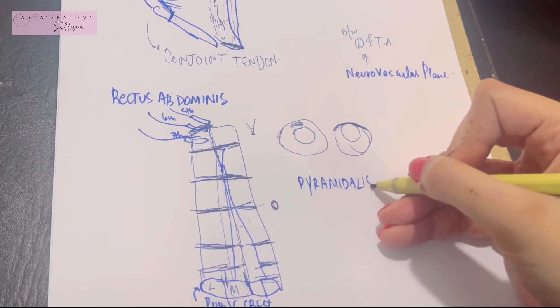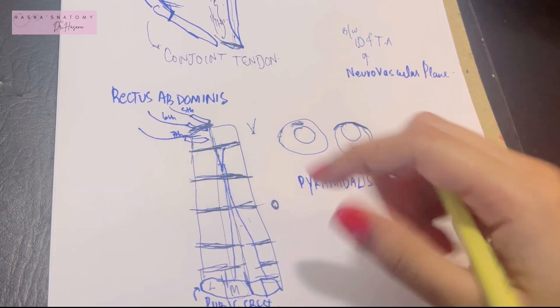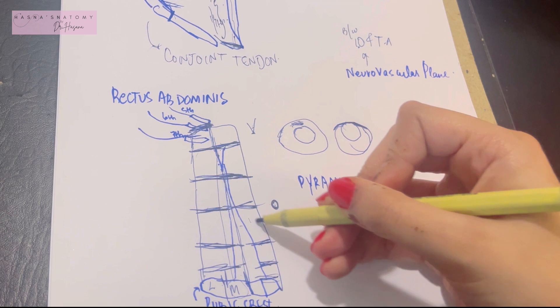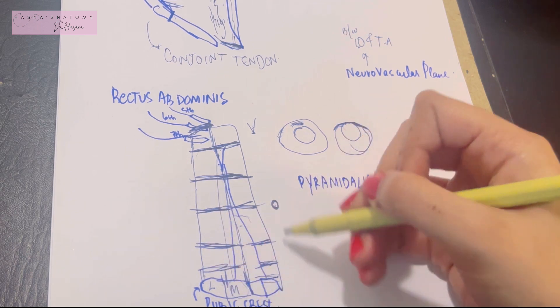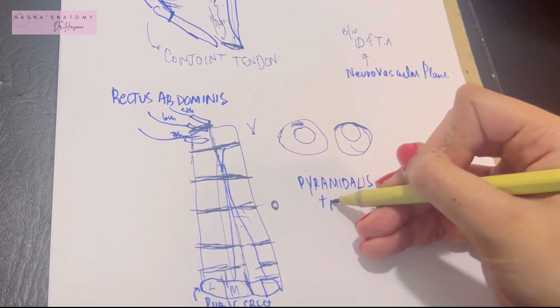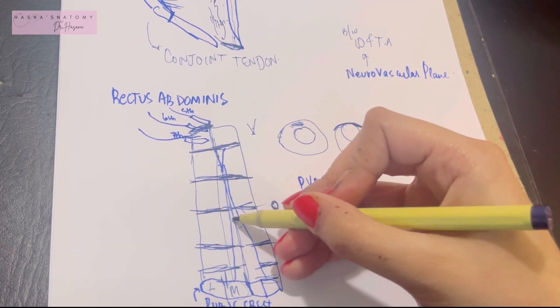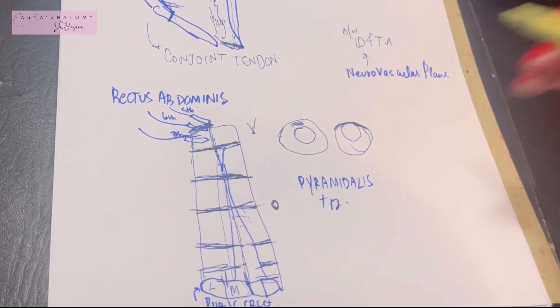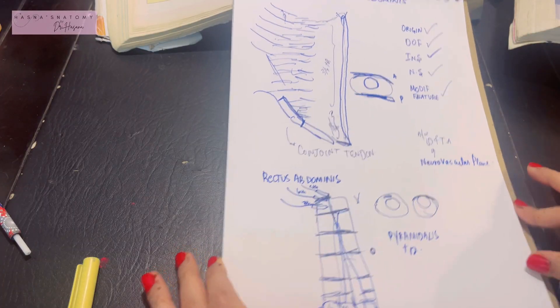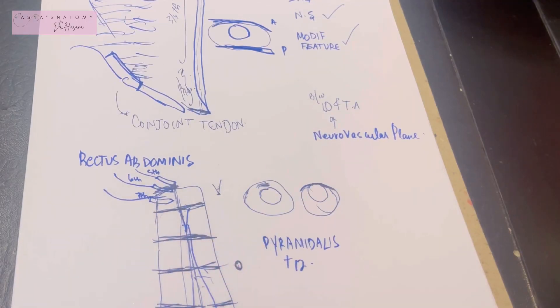The final muscle is the pyramidalis — a small muscle lying in the lower and inferior part of the rectus abdominis, supplied by the T12 nerve, and inserted into the linea alba.